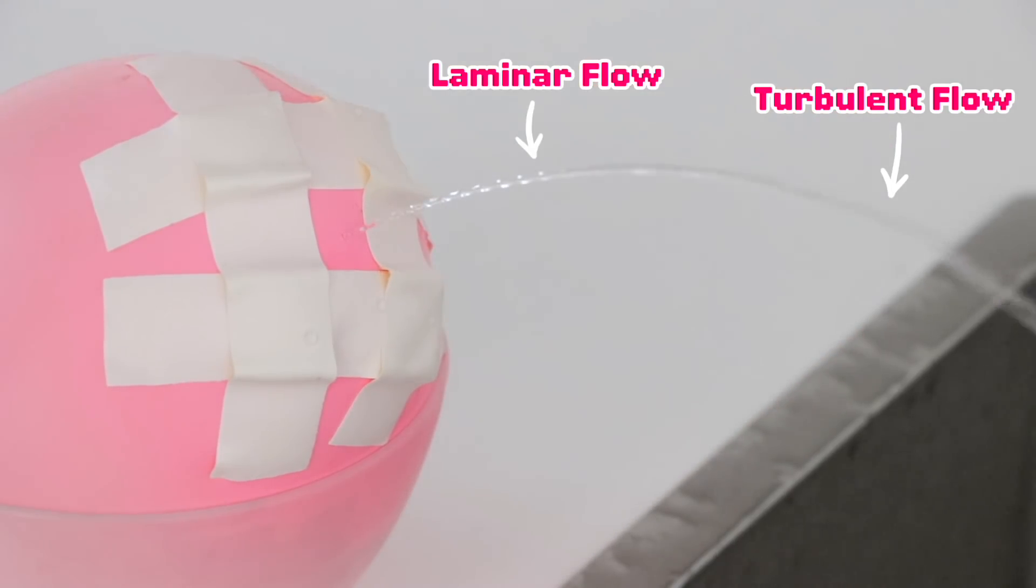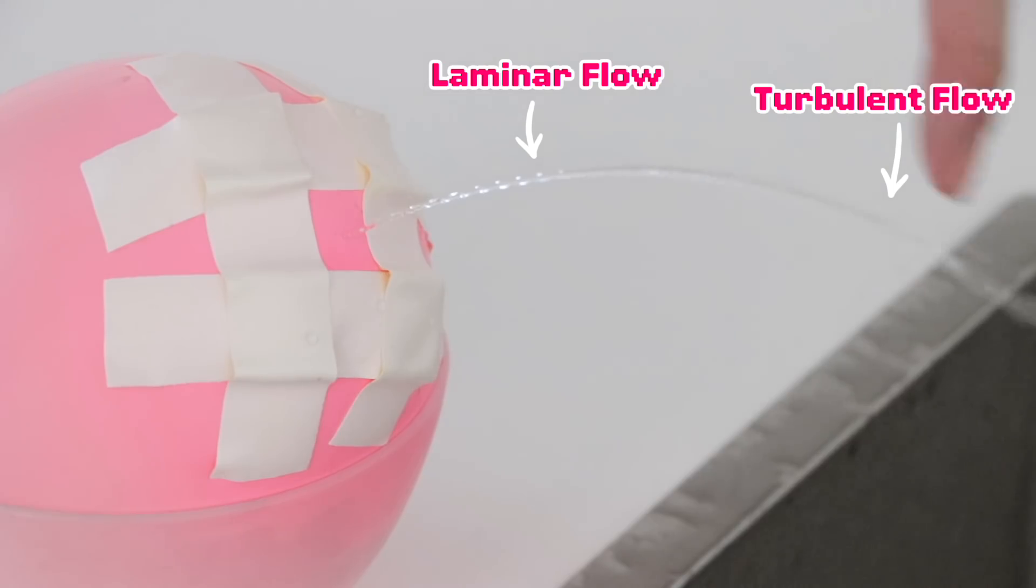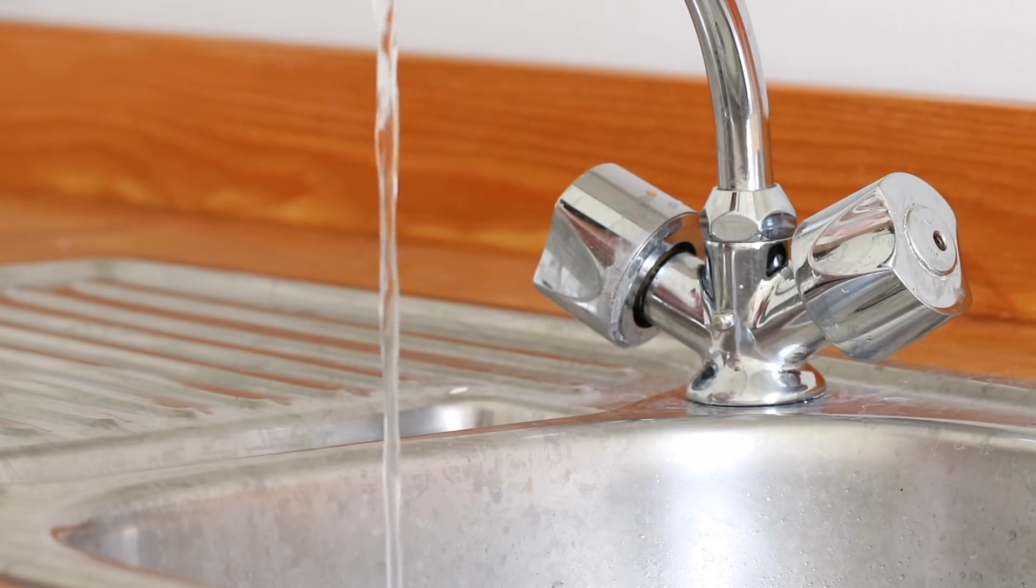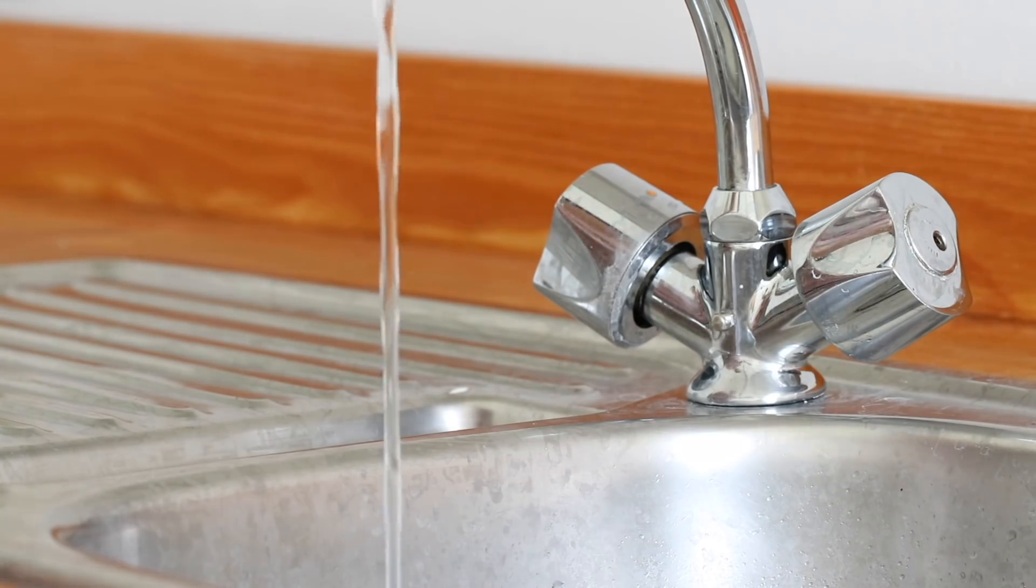What's interesting is that laminar flow is actually not that rare. It happens when water is pushed out of a small opening with a bit of force, but we rarely notice this in everyday life. Even water coming out of a tap is usually laminar in the beginning, however this turns turbulent after a while.